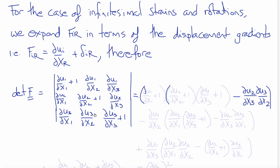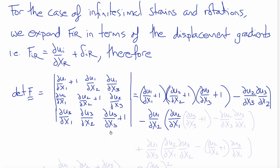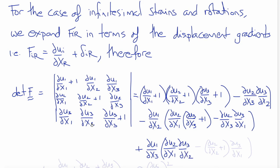The determinant of this matrix is (del u_1/del x_1 + 1) times the determinant of the submatrix — which is (del u_2/del x_2 + 1)(del u_3/del x_3 + 1) minus (del u_2/del x_3)(del u_3/del x_2) — minus (del u_1/del x_2) times the determinant of its submatrix: (del u_2/del x_1)(del u_3/del x_3 + 1) minus (del u_2/del x_3)(del u_3/del x_1), plus (del u_1/del x_3) times the determinant of its submatrix: (del u_2/del x_1)(del u_3/del x_2) minus (del u_2/del x_2 + 1)(del u_3/del x_1).